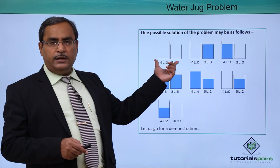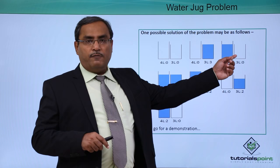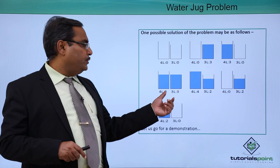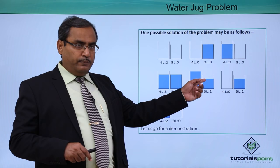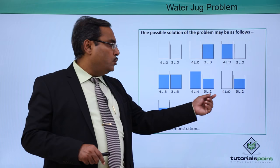Here is one solution. Initially both jugs are empty: state (0, 0). First, fill up the 3-litre jug to get state (0, 3). That 3 litres is poured into the 4-litre jug, giving state (3, 0). The 3-litre jug is filled up again to give state (3, 3). Now pour from the 3-litre jug into the 4-litre jug — it can take 1 litre — leaving 2 litres in the 3-litre jug, giving state (4, 2).